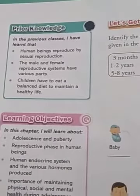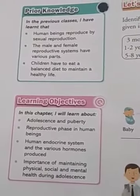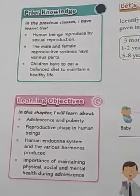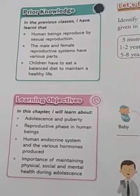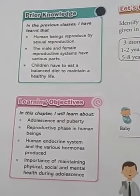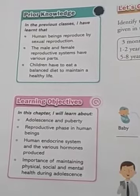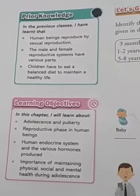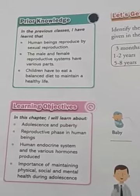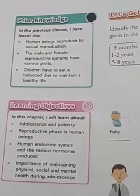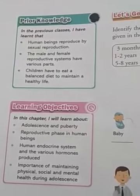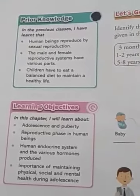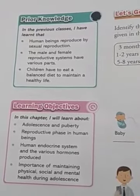Now in this chapter we are going to read what adolescence and puberty are — what this age means. We are talking about the age of adolescence, and in this chapter we will get detailed knowledge about adolescence and puberty.